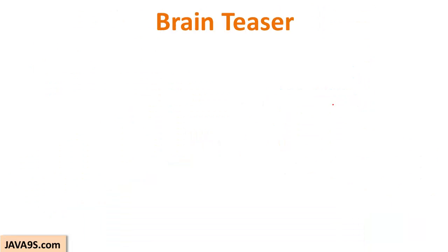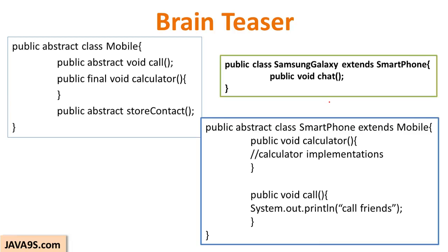Here is a brain teaser: look at this program which has an abstract class Mobile, an abstract class Smartphone, and a concrete class SamsungGalaxy extending Smartphone. Find the faults that have been intentionally introduced, based on the rules discussed. Give your answers as comments to this video and try to answer before looking at other comments.